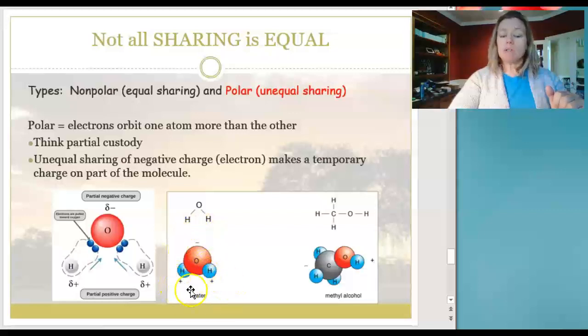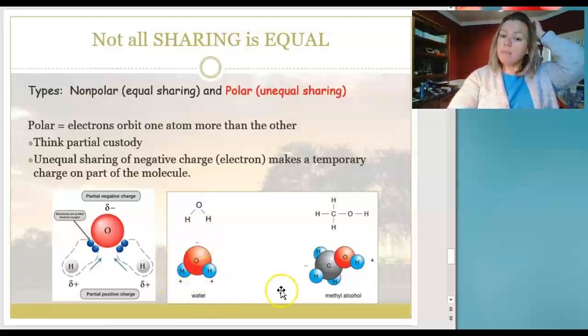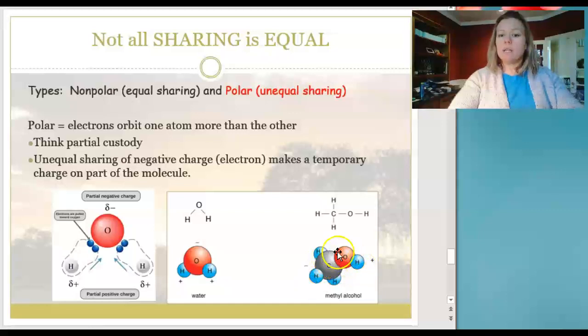That's why we say that there are partial negative charges on the water molecule you see here, because the electrons are more often but not all the time orbiting the oxygen atom. When you look at this molecule in three-dimensional space, there is a region of this molecule that carries a negative charge and there's a region of the molecule that carries a partial positive charge. The tug of war is not even. That's all you need to know.